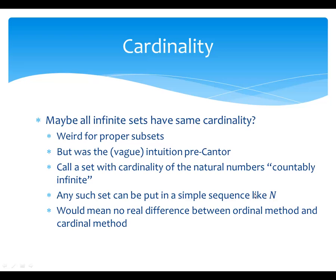In other words, you can put them in a simple sequence. Notice there's a correspondence here between the cardinal method and the ordinal method, because putting things in a simple sequence — labeling them 0, 1, 2, 3, 4 — that's what it means to have a one-to-one correspondence with the natural numbers. That's exactly how you count things with the ordinal method. So the ordinal method and the cardinal method of comparing sizes give the same answer for finite sets. Maybe they always give the same answer — but the answer is no, they don't.